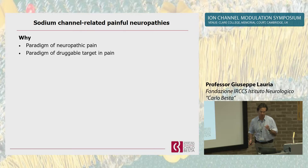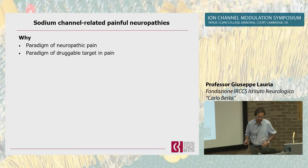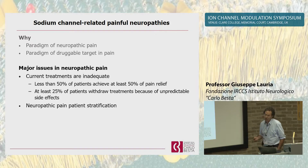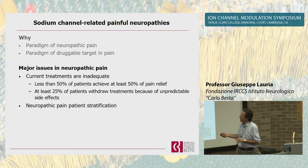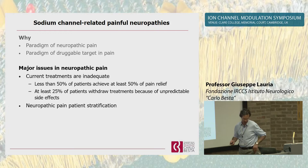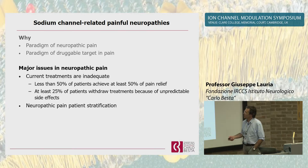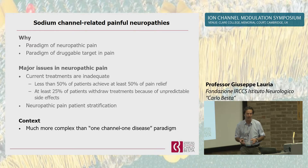This is a paradigm of neuropathic pain, as Mark introduced, and likely might be a paradigm of druggable targets in neuropathic pain. But let me introduce what are the major issues in this field. The current treatments are really inadequate - more than 50% of patients cannot achieve at least 50% of pain relief with all available drugs, and at least one quarter of these patients withdraw treatments because of unpredictable side effects. This group of drugs includes all what you know, including unfortunately carbamazepine. And there is a real lack in the concept of neuropathic pain stratification, which is very relevant for the design of clinical trials. Finally, the context is really much more complex than the paradigm of one channel, one disease in clinical practice.